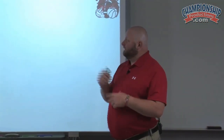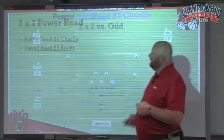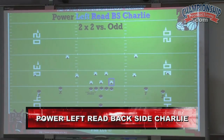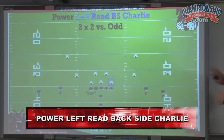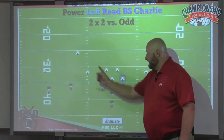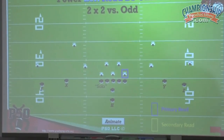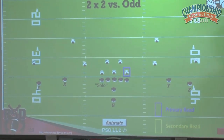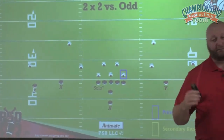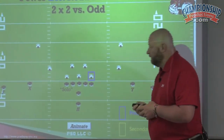We're going to start power read with a backside Charlie read. We're running power left in this case and reading the backside C-gap defender, or Charlie. Power left goes in this direction — our right guard will be pulling, and we're going to read the backside Charlie. Because we're running it out of a two-by-two, it changes our rules a little bit for our tackles, so let's run through what we have.